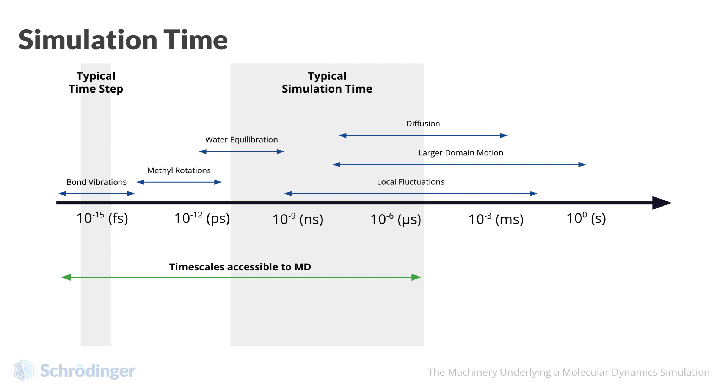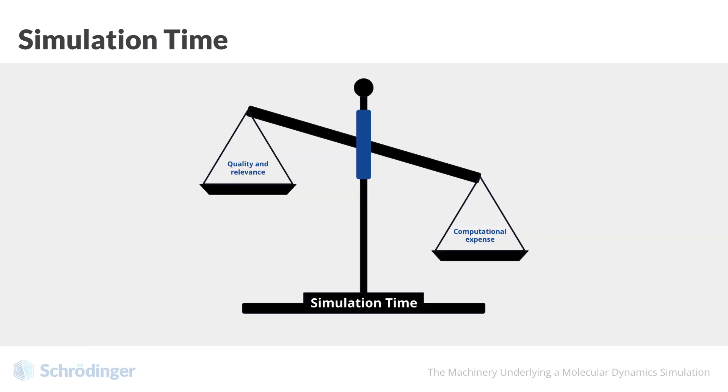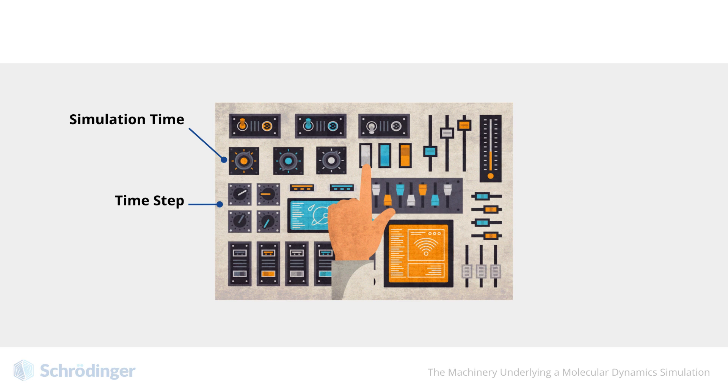In general, simulation time is a trade-off between the computational expense of running longer simulation versus the quality and relevance of the results. In some cases, we may not need very long simulation to attain a property of interest, like density, of an amorphous small molecule. However, to observe diffusion or aggregation, we may need significantly longer simulation time. As a very general guideline, usually our simulation time should allow us to sample the system changes relevant to the property of interest at least ten times. For example, if you are trying to get an average density, you should capture at least ten of the major volume fluctuations.